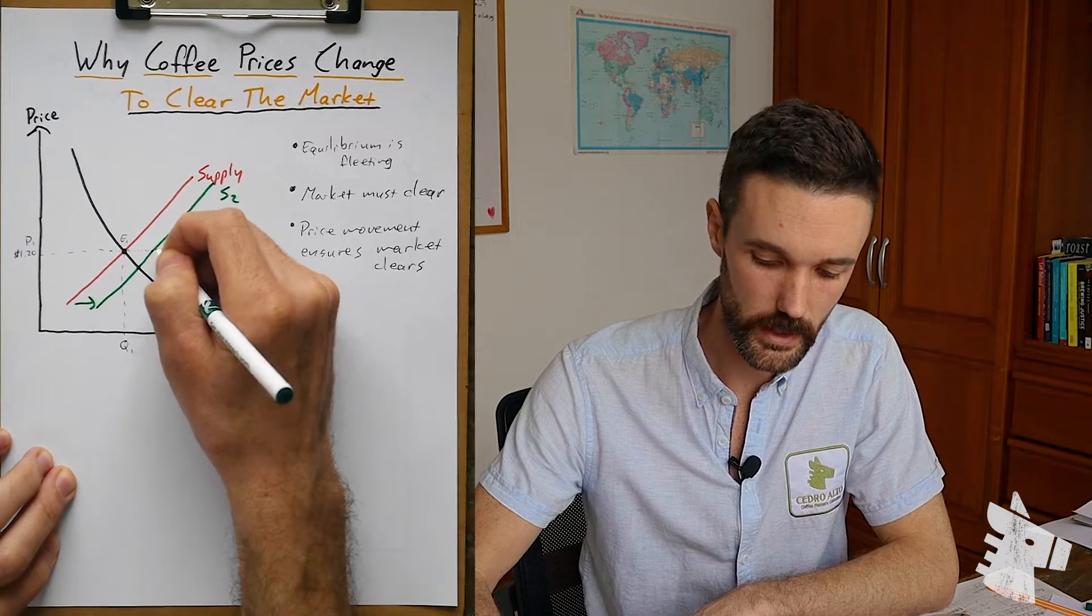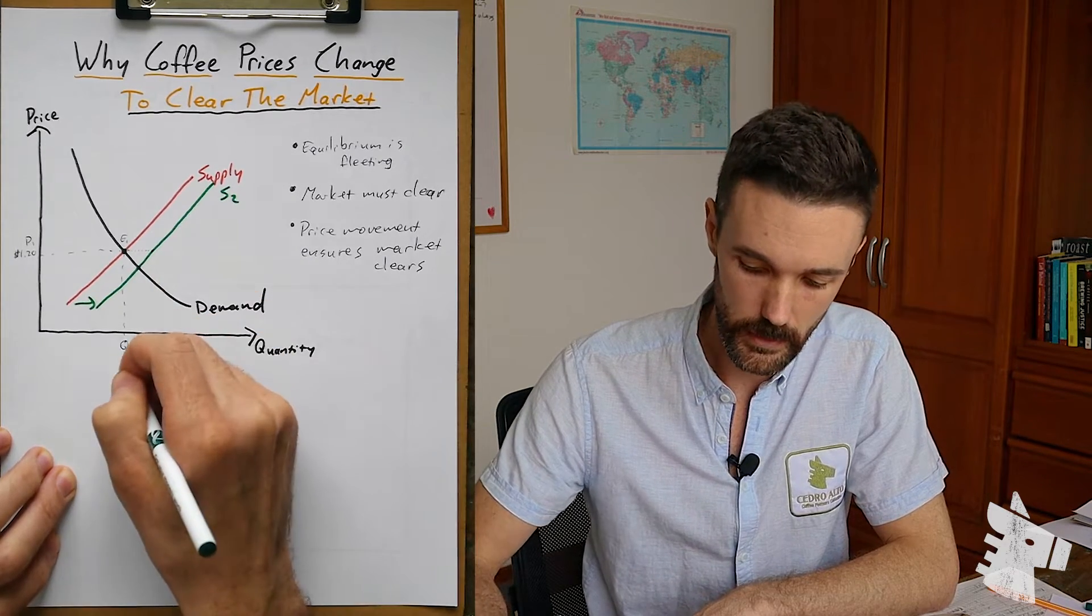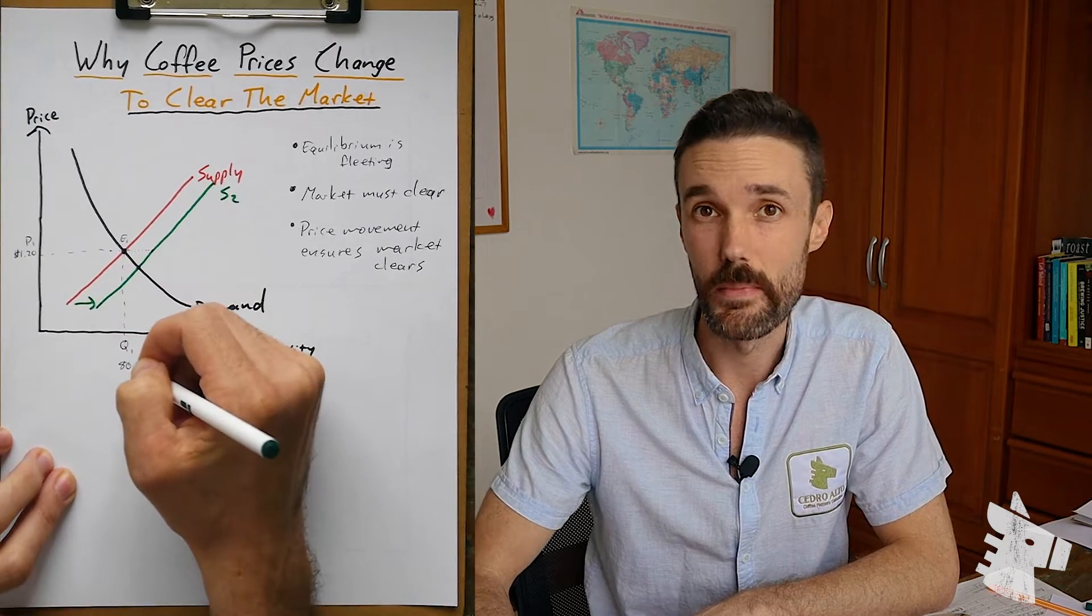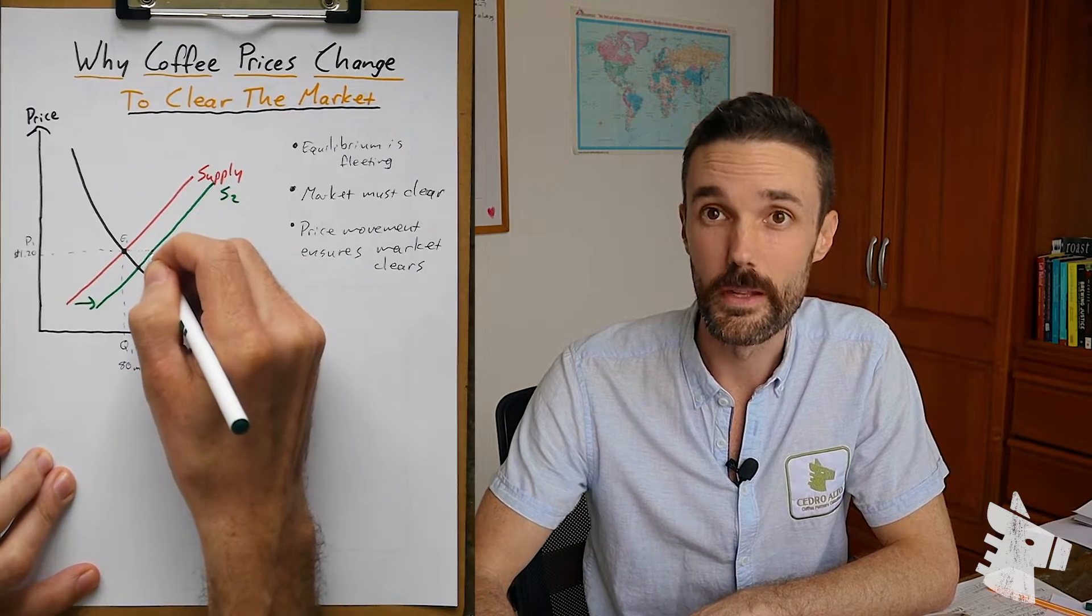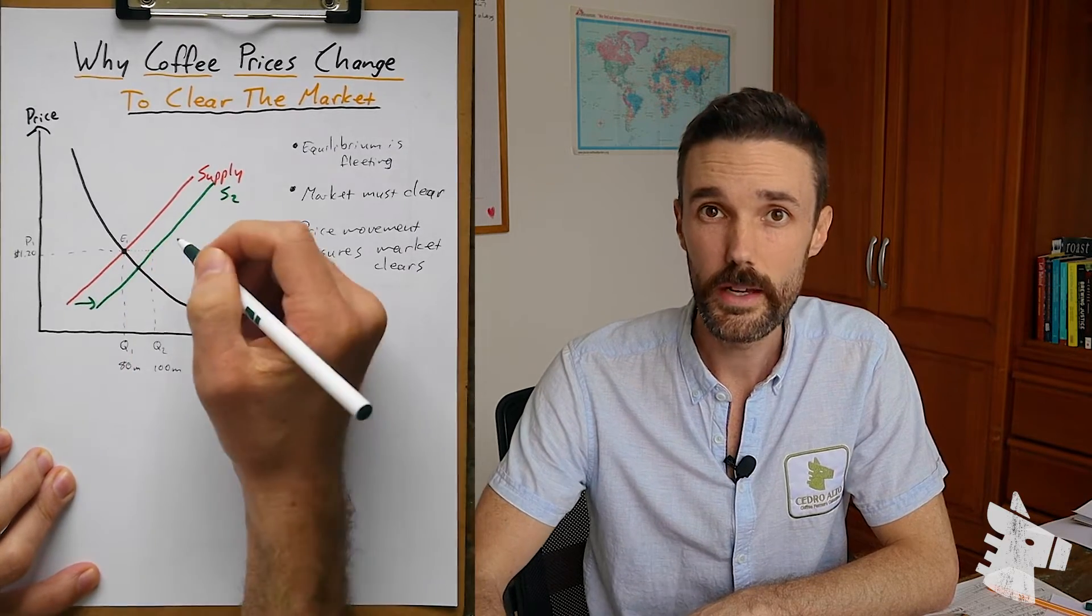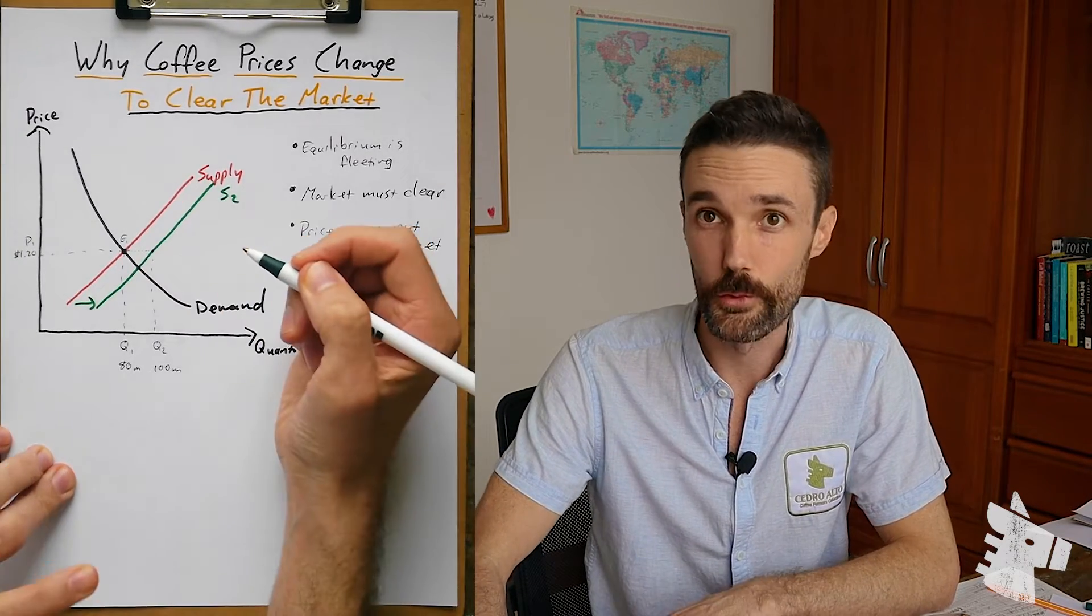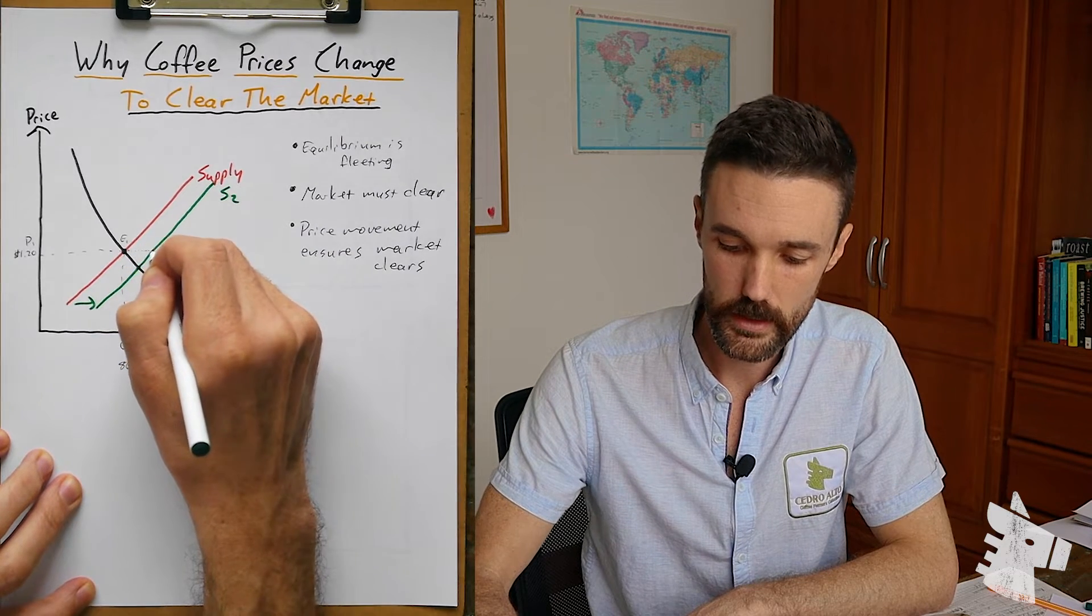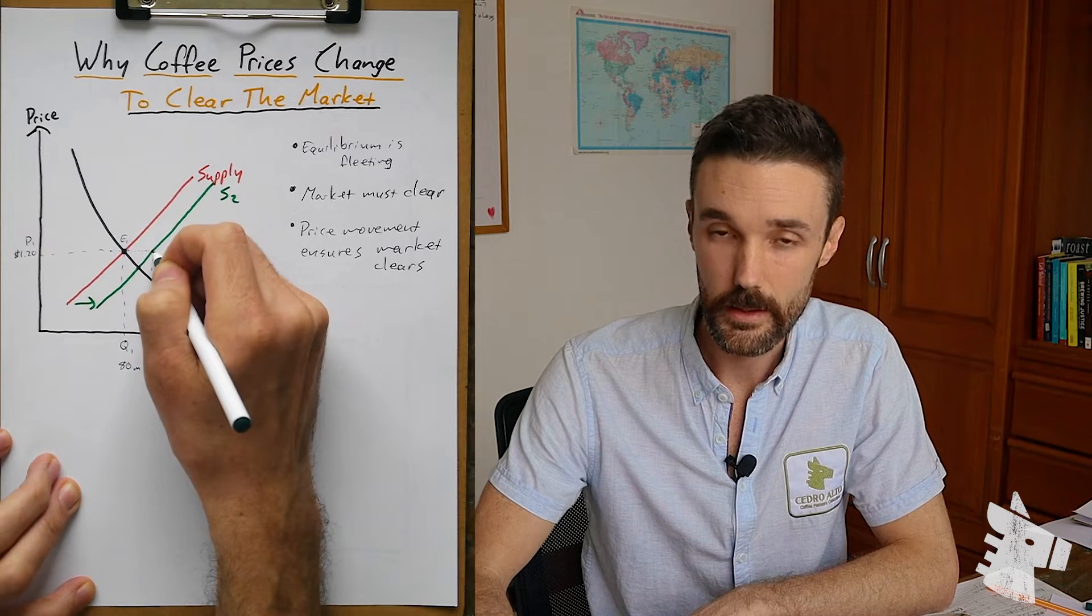And then the sellers are going to say, well, you liked Q1, let's say 80 million bags. You liked 80 million bags at $1.20 a pound. How about 100 million bags? At what price? Well, $1.20. You like that price, right? Well, this would be great for the sellers, of course. So they're going to try to move straight outward, same price, more quantity. They love it.